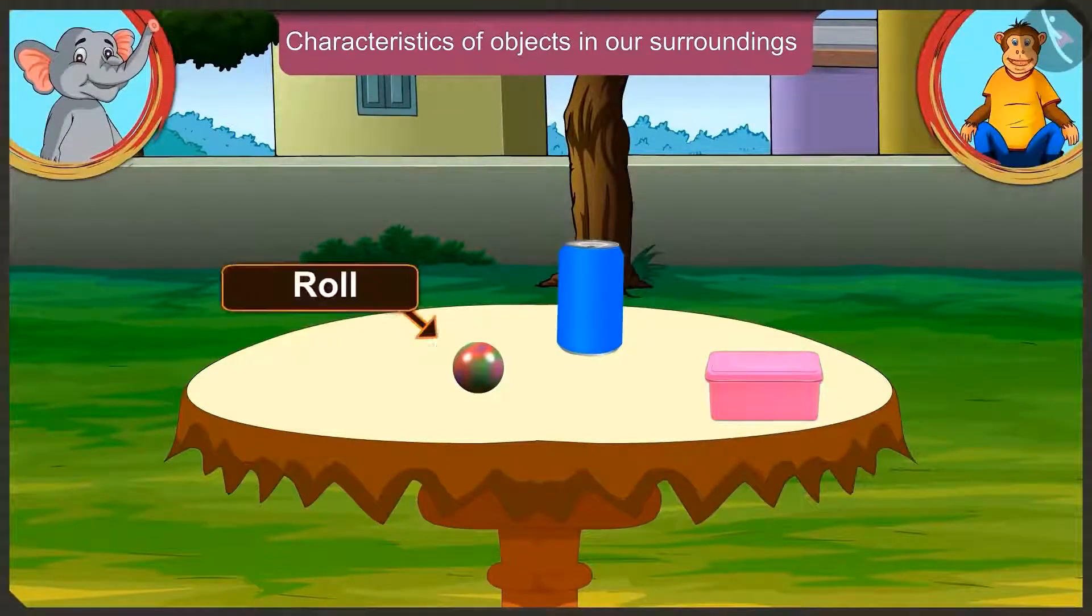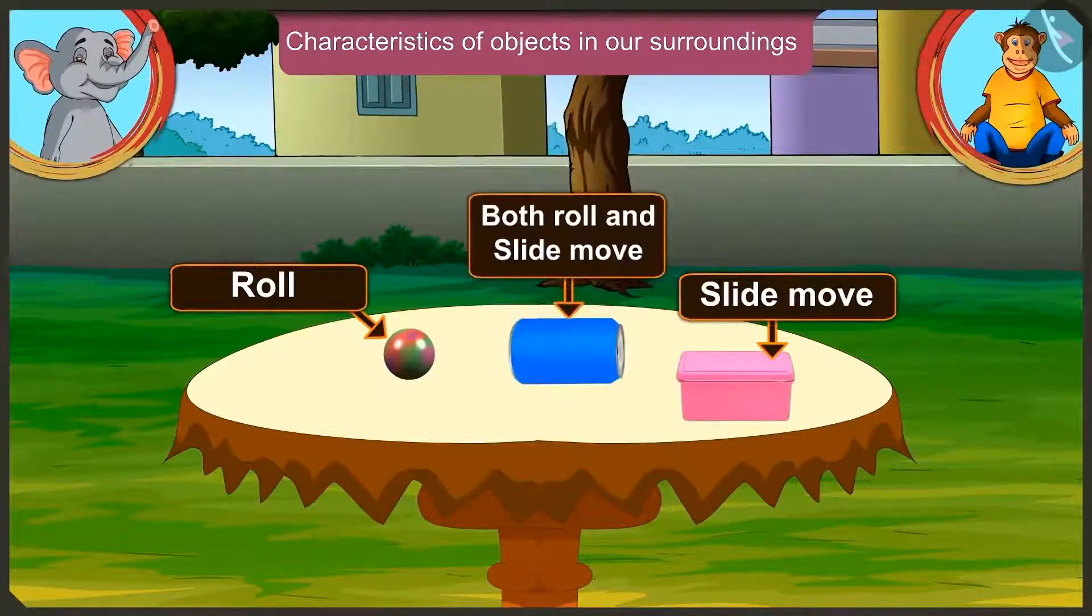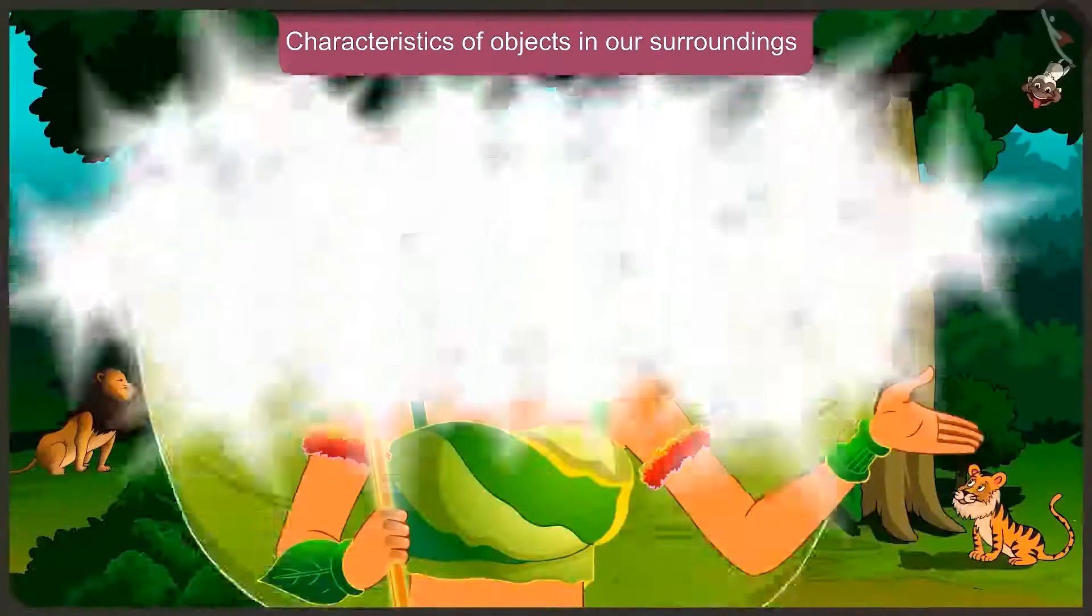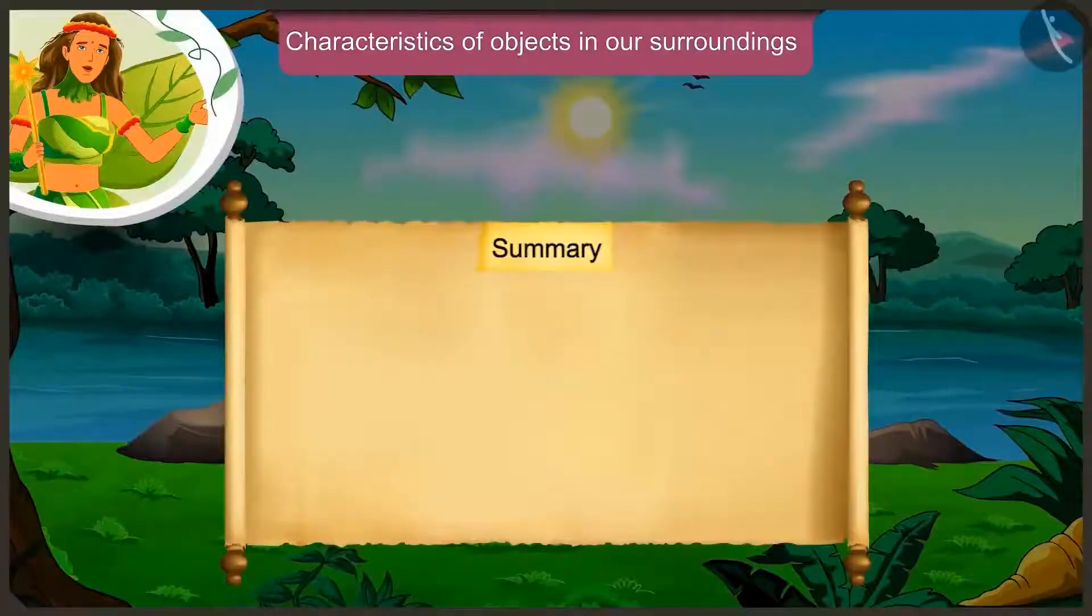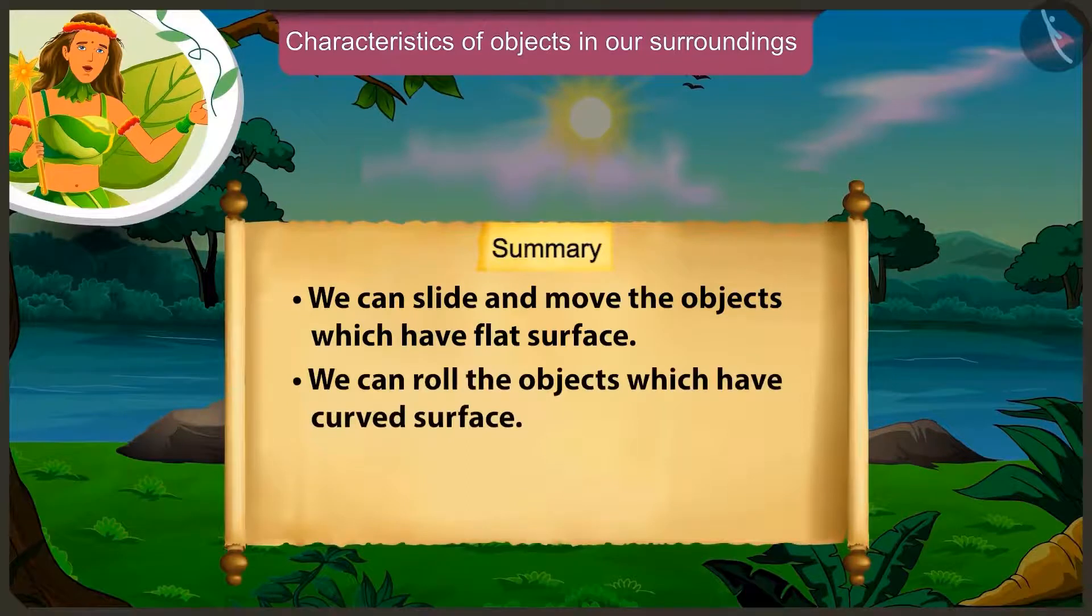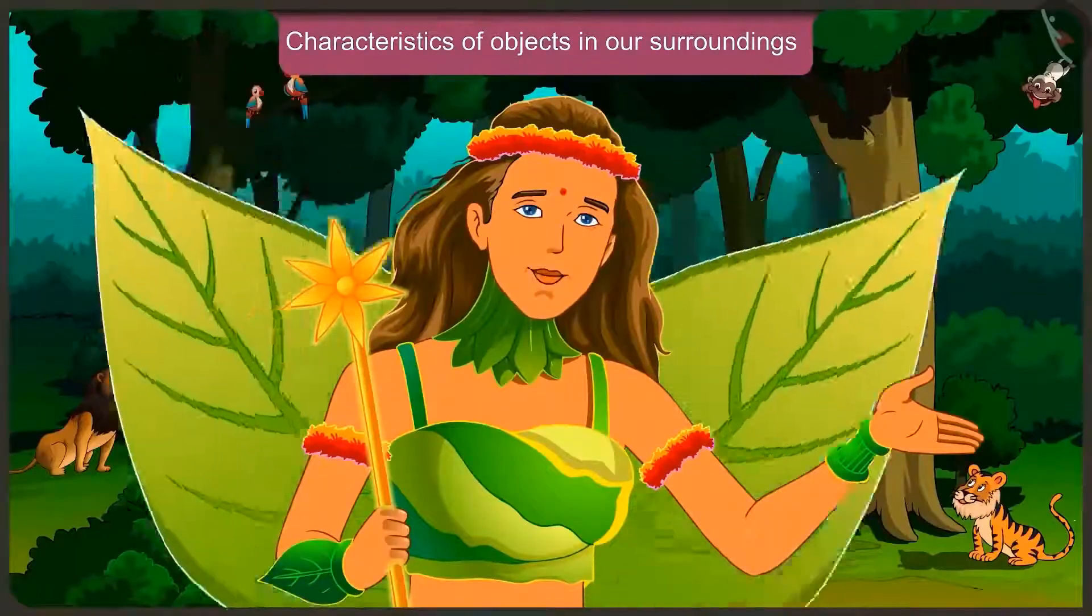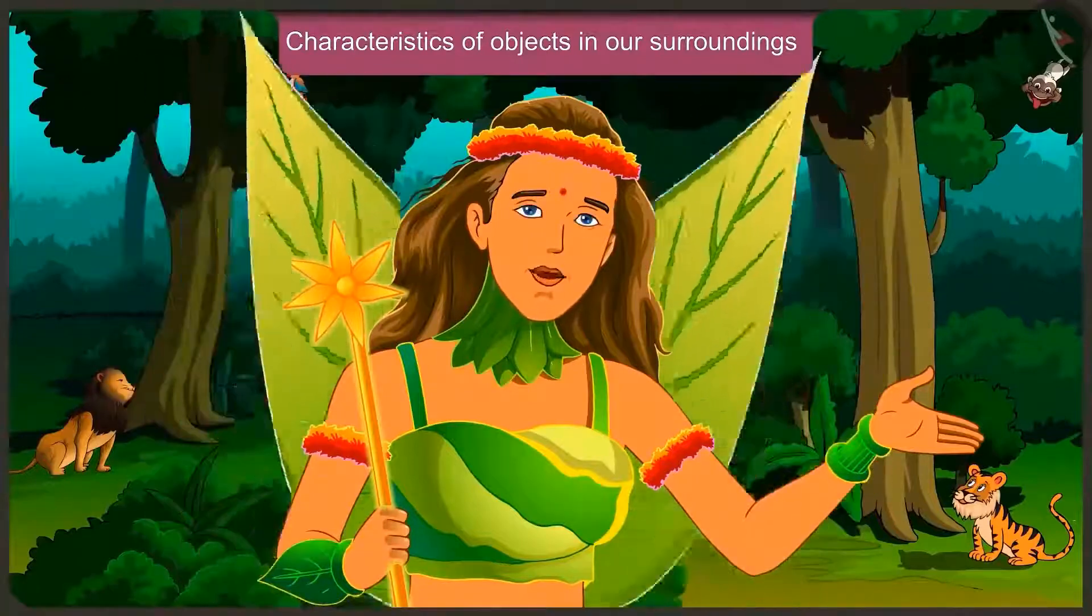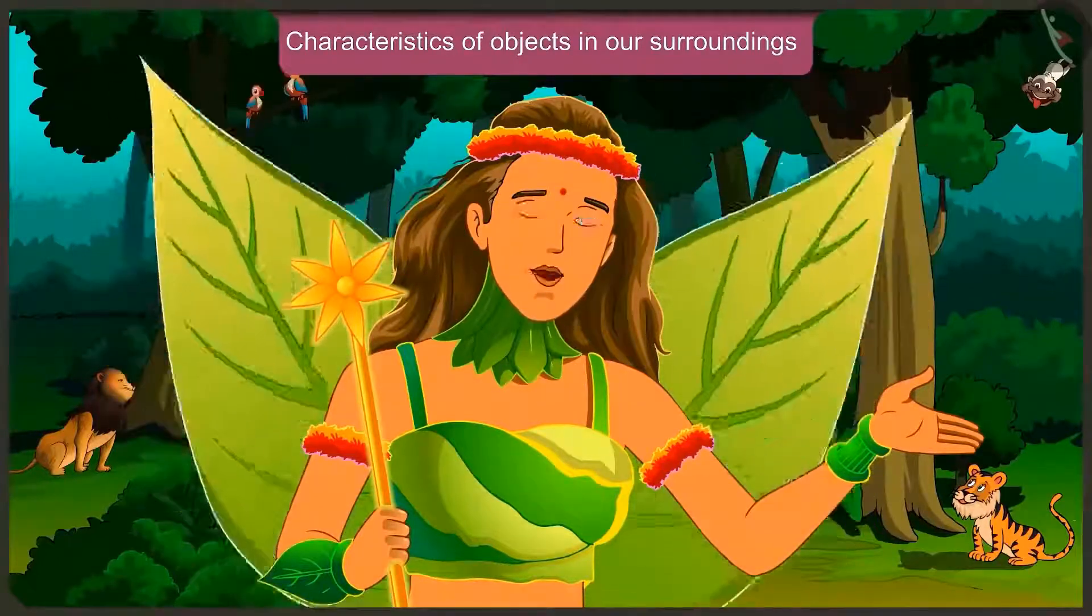Oh wow, Appu. You have understood very well as to which objects can be rolled and which can be slided and which can be rolled and slided. Friends, today we understood some interesting facts about the characteristics of objects around us. For example, we can slide the objects with a flat surface, we can roll the objects with a round surface, and we can roll and slide objects with a cylindrical surface. You too along with your friends can learn about some more such objects with flat surface and curved surface. In the next video, we will learn some more characteristics of objects around us.